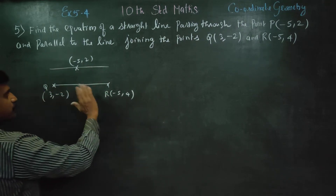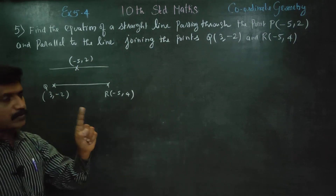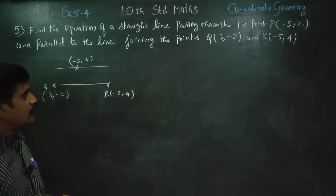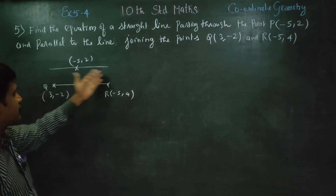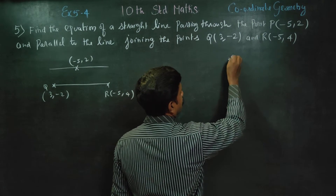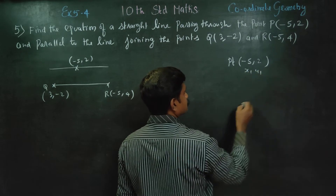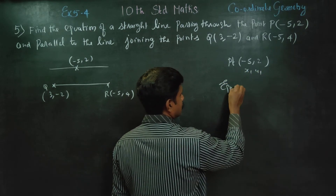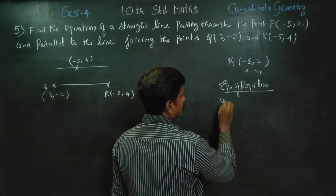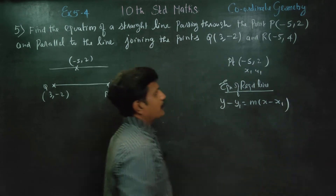To find the equation of the required line, we need the slope and a point. Since the lines are parallel, the slopes must be equal. We have the point minus 5, 2, which is x1, y1. The equation of the required line uses the one-point slope formula: y minus y1 equals m into x minus x1.